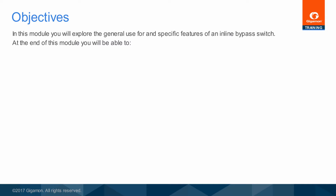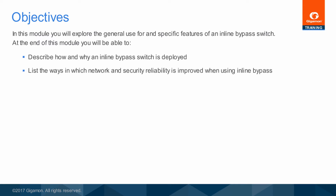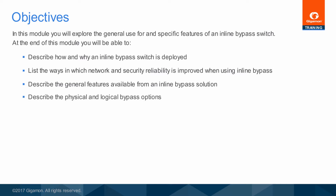At the end of this module, you will be able to describe how and why an inline bypass switch is deployed, list the ways in which network and security reliability is improved when using inline bypass, describe the general features available from an inline bypass solution, describe the physical and logical bypass options, and explain how inline bypass works with GigaSECURE and GigaSMART offerings.